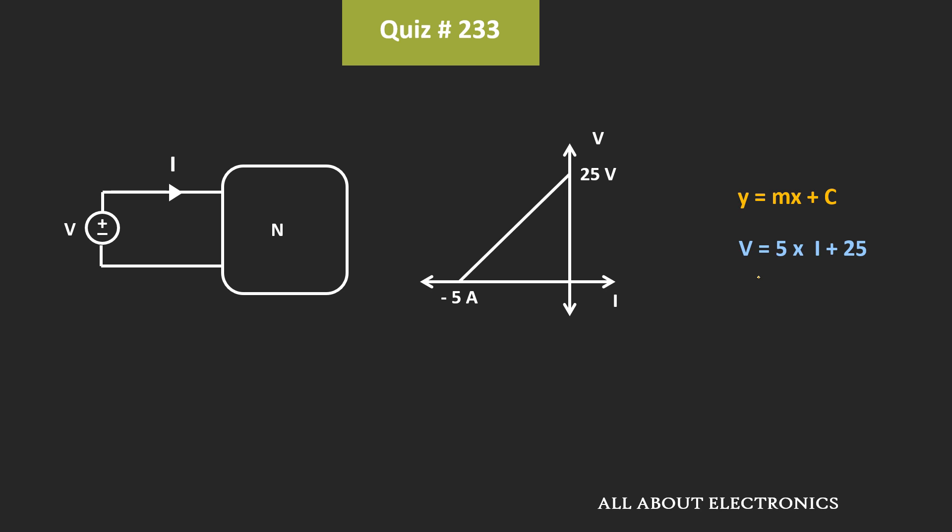And if you want to validate this expression, then just put the value of I equal to 0. So when I is equal to 0, then the value of V is equal to 25V. And similarly, when V is equal to 0, at that time you will get the value of current I as minus 5A.